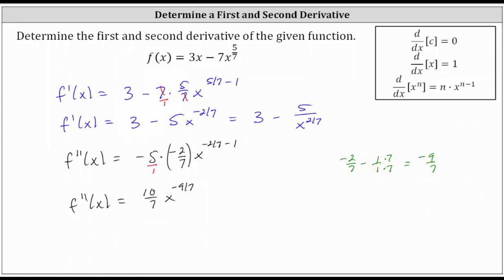Let's rewrite this using a positive exponent. Ten-sevenths x to the power of negative nine-sevenths is equivalent to ten divided by the product of seven and x to the power of positive nine-sevenths. I hope you found this helpful.